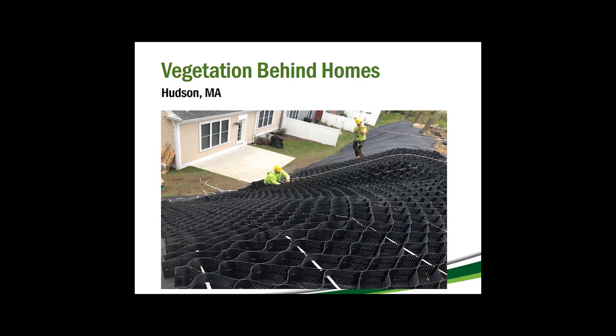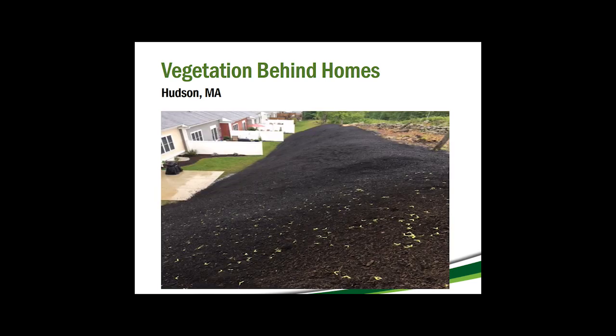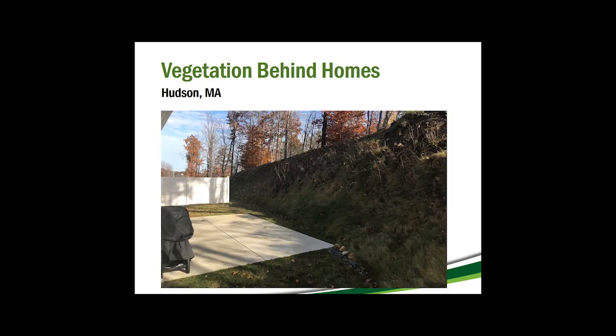The GeoWeb panels are spread out over the slope face to provide complete coverage, and the tendons are run through the panels and tied off to the crest anchorage method of choice. The panels are filled with nutrient-rich topsoil to allow for vegetation growth. The panels should be fully filled so that the plastic isn't visible, but shouldn't be overfilled since any soil above the panels is subject to erosion. You can seed by mixing seeds in with the soil or by hydroseeding after everything is in place. A couple months later, the grass is fully grown in, completely camouflaging the GeoWeb panels, and the embankment is now protected against erosion.